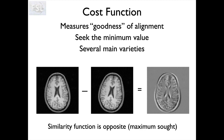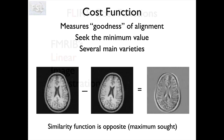Similarity functions are exactly the same thing but the opposite way around - they try to get the maximum value when the alignment is good, so as the alignment gets better those values get higher. Similarity functions are simply the opposite of cost functions; if you multiply one function by minus one you get the other. So they're interchangeable, and we're going to talk about cost functions.